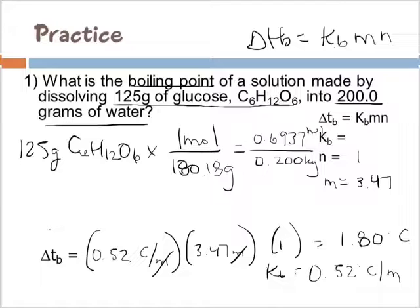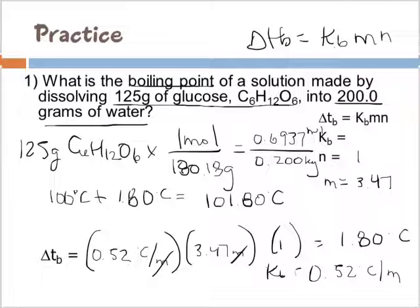We want to know what the boiling point is. If water boils at 100 degrees Celsius, this is changing the boiling point by 1.80 degrees Celsius. I have to take 100, that's a degree, plus, and so it's going to be 101.80 degrees Celsius will be our new boiling point. Thank you very much.